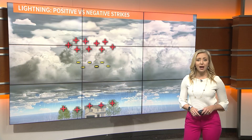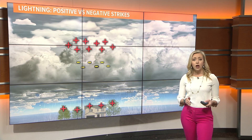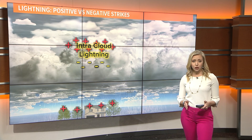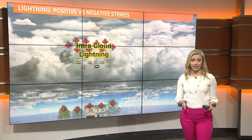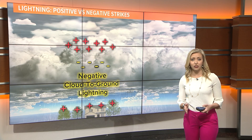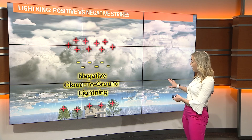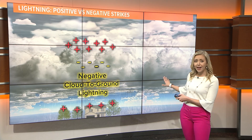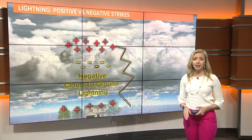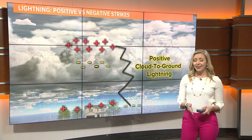Lightning can occur between positive and negative charges in a thunderstorm cloud — we call that intracloud. Lightning can also occur between opposite charges from a cloud to the ground. Both negative and positive cloud-to-ground lightning is possible.